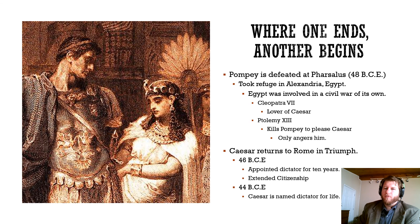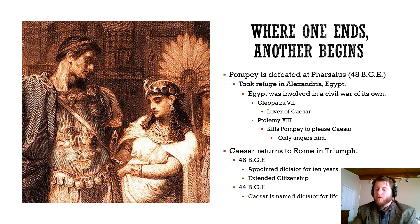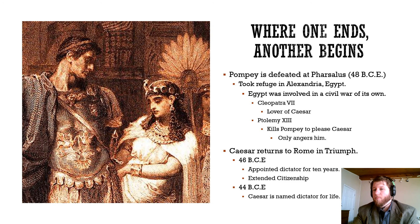Pompey is defeated at Pharsalus and goes to Egypt, hiding out in Alexandria — the capital of Egypt at that point. Egypt was actually in a civil war of its own: Cleopatra was fighting with her brother-husband Ptolemy XIII. Ptolemy wants to make Caesar happy and be on the winning side; he had invited Pompey in for protection but knows Caesar's coming, so he kills Pompey to please Caesar. This enrages Caesar, because Pompey was his best friend — even if they were at war, he certainly didn't want some outsider killing him. So Caesar works with Cleopatra to take out her brother Ptolemy.